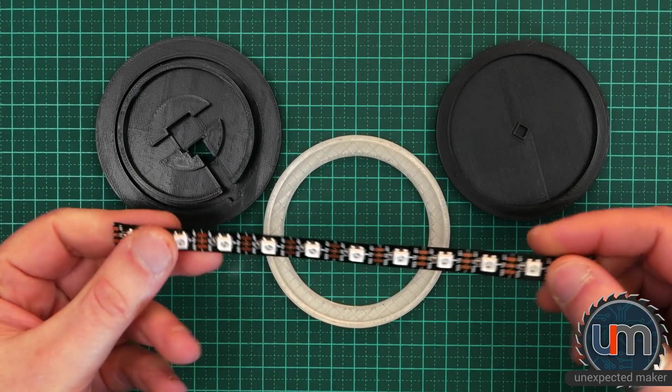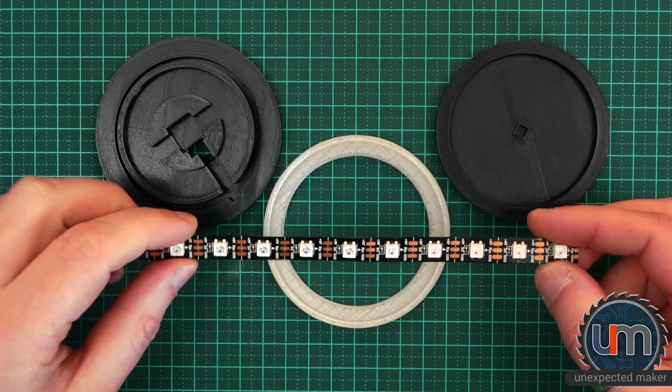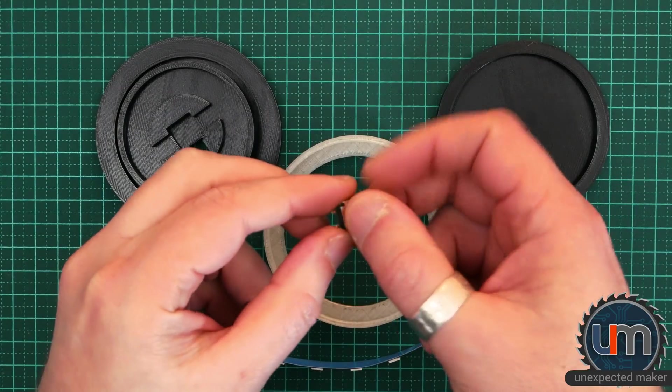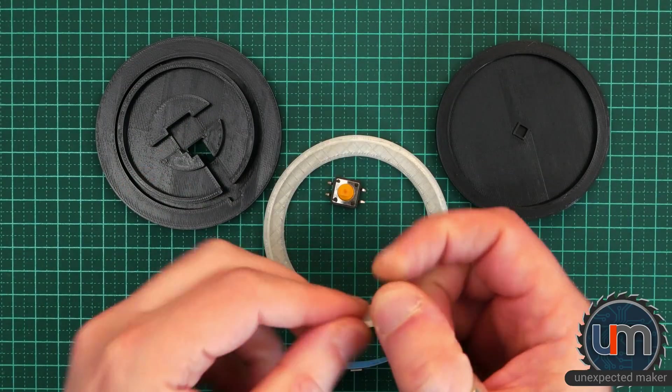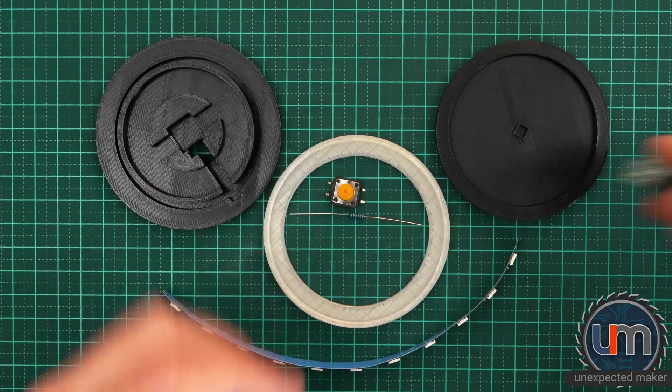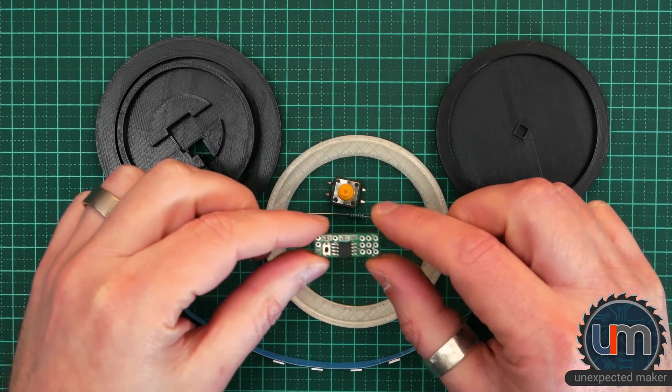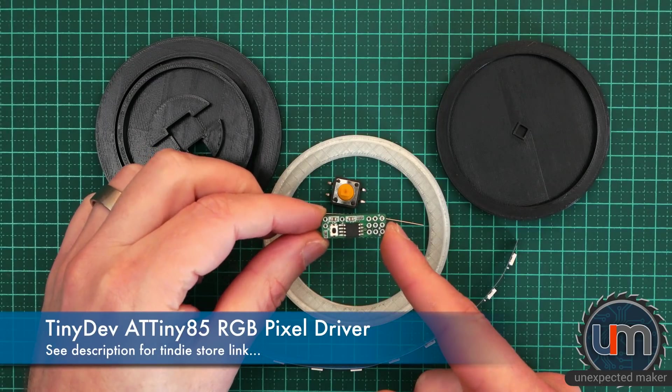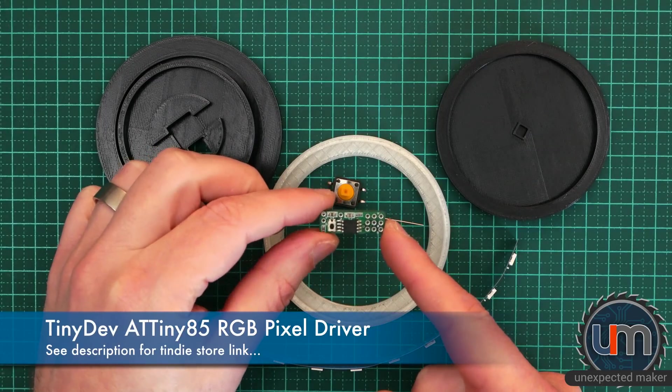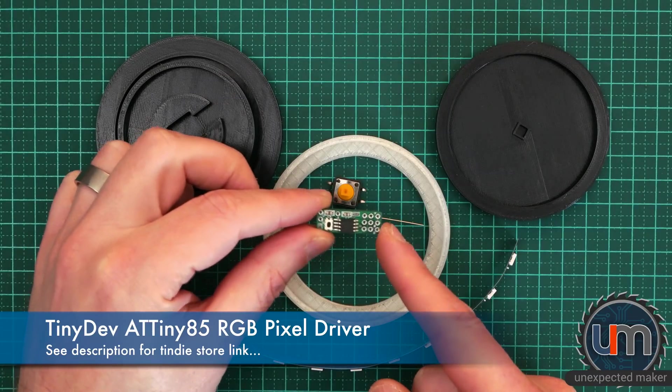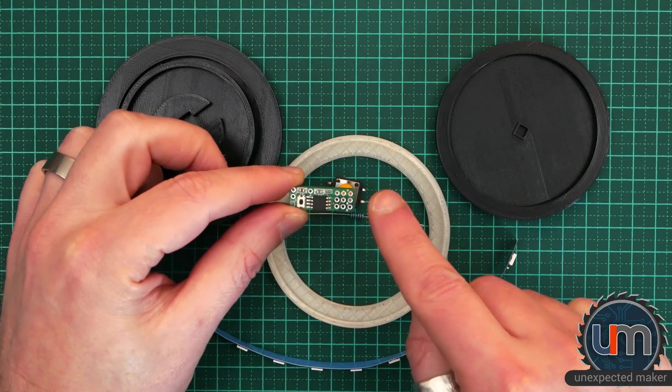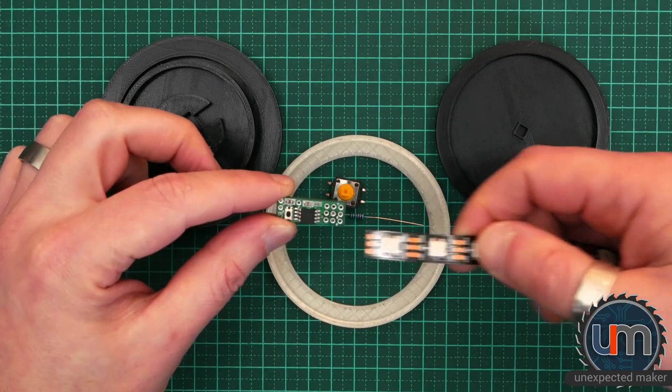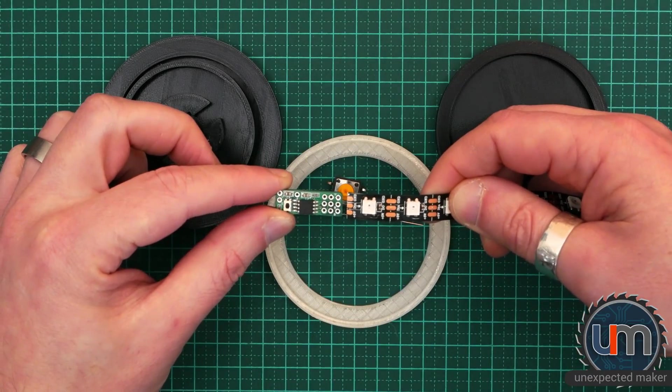We'll also need a strip of NeoPixel or NeoPixel style RGB LEDs, a momentary button, a 10K resistor, and of course we need a microcontroller board. Now the board I'm using is my little tiny dev board, which is an ATtiny85 that I built and that I also sell on Tindie that's specifically designed for projects like this. It's designed with ground, VCC, and a pin out, pin 0, to be able to connect directly to a NeoPixel strip.